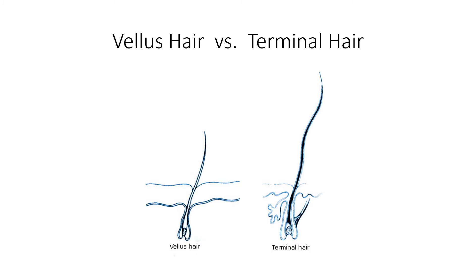There are two types of hairs: vellus hairs and terminal hairs. Vellus hairs are common all over your body — we sometimes think of them as peach fuzz. They don't grow very long and don't have a lot of pigmentation. By contrast, terminal hairs give us our hair color, for instance, while vellus hairs — found on the inside of your arm — are hardly noticeable, very tiny, fine hairs.